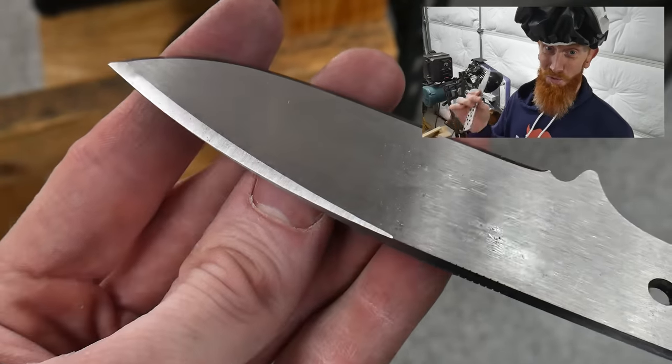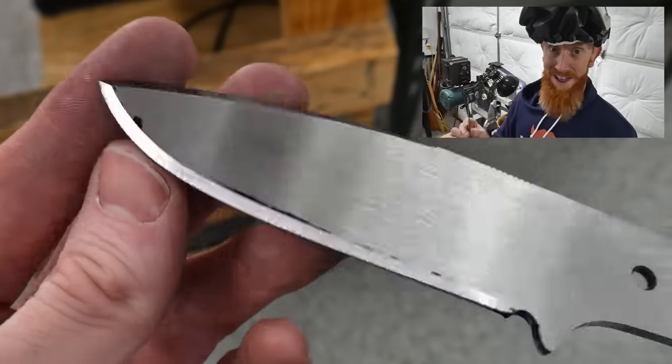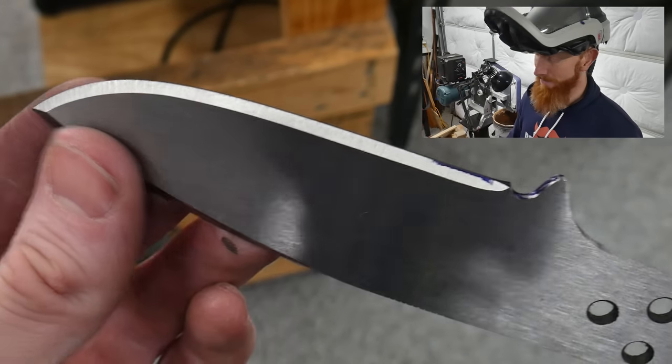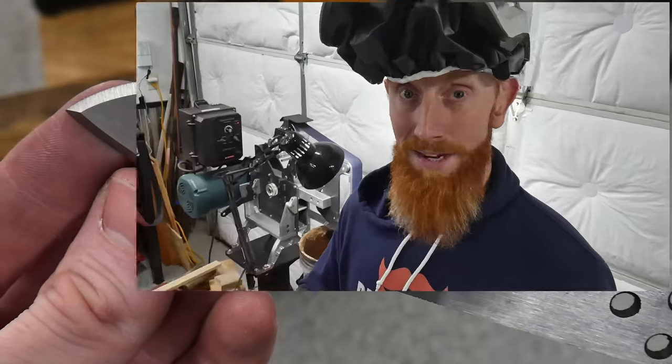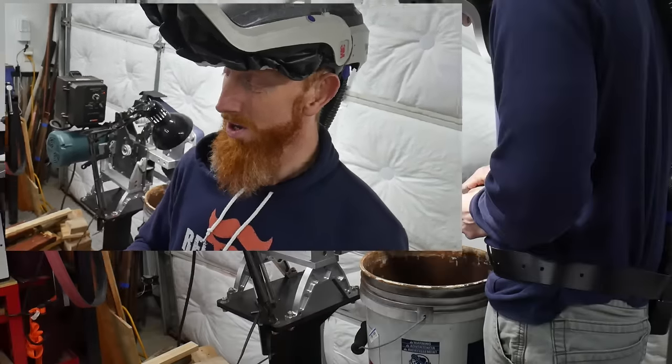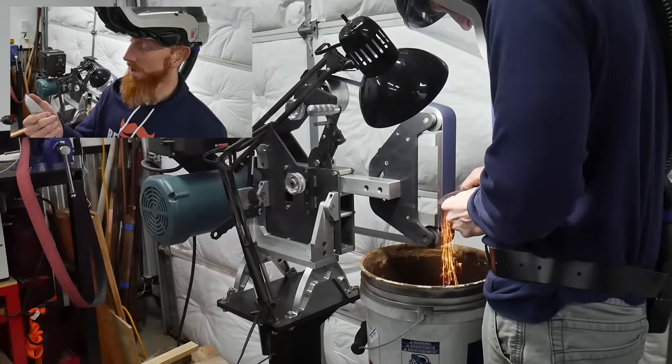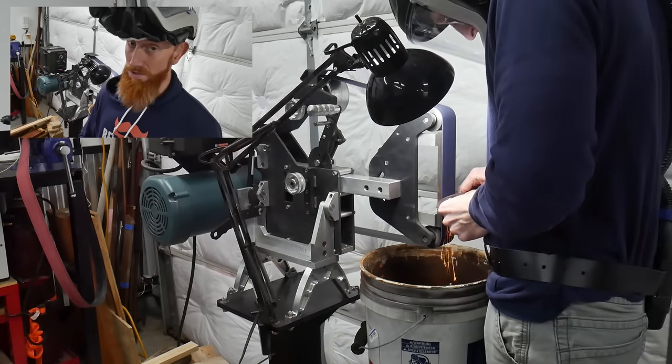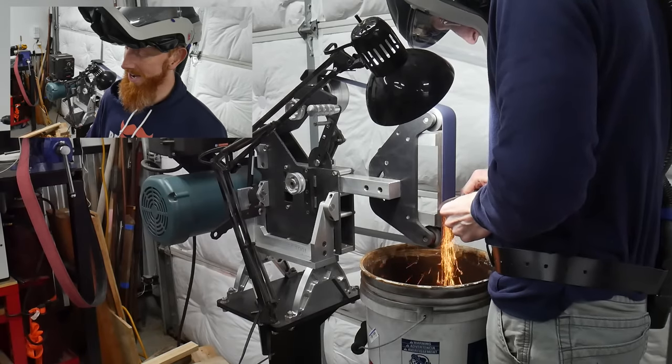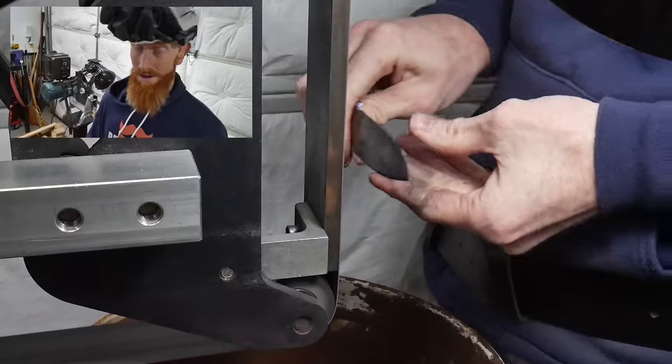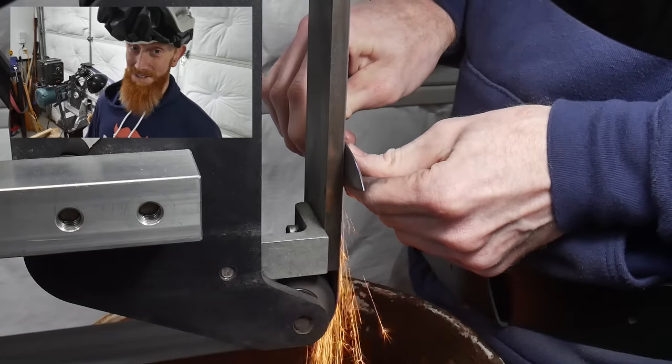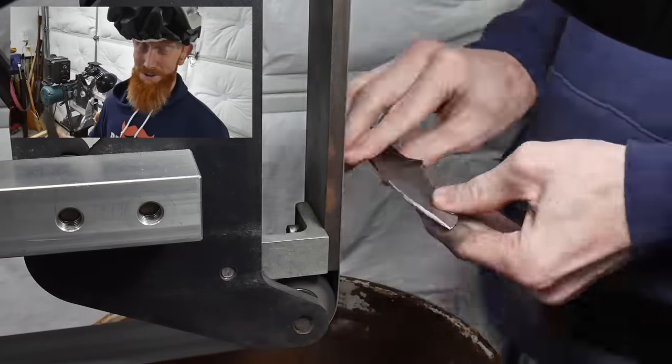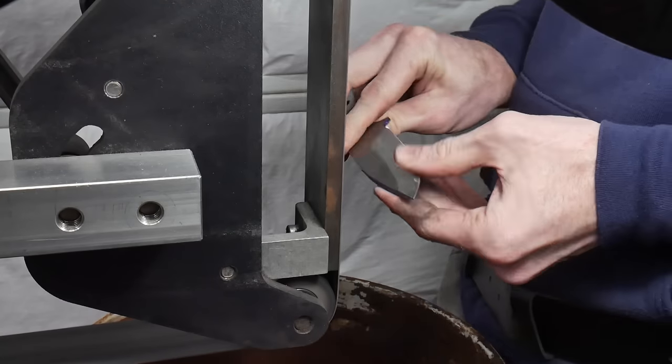So now we have the initial rough bevel started at a very aggressive angle down to the center line of the knife. I'm going to start walking these bevels back towards the spine. Now it's been a while since I did any grinding—a couple months now actually with the move and all—so we'll see how this turns out. Also, I put a little clip on the back of this knife, a little false edge on the back, so we'll see how that holds up to a close to full flat grind.